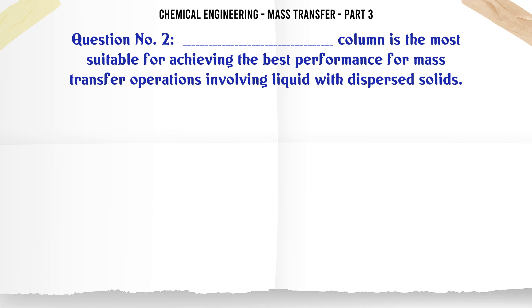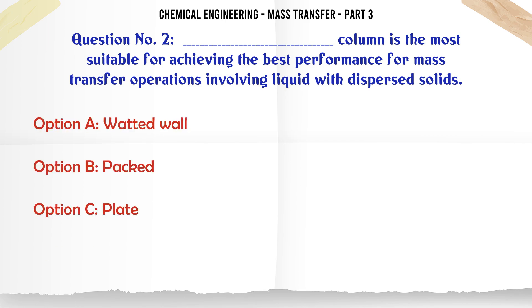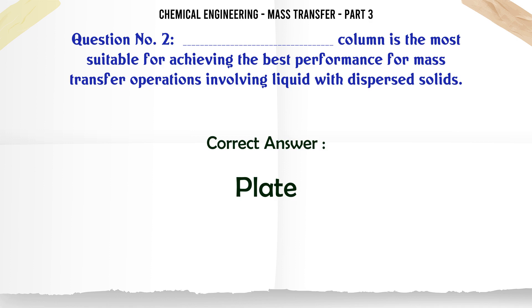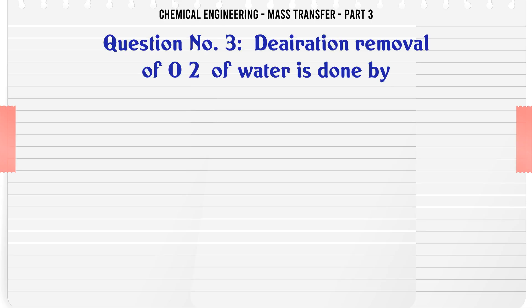Which column is most suitable for achieving the best performance for mass transfer operations involving liquid with dispersed solids? Options: A) wetted wall, B) packed, C) plate, D) spray. The correct answer is: plate.